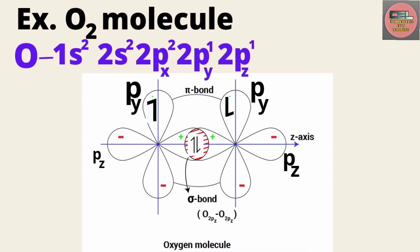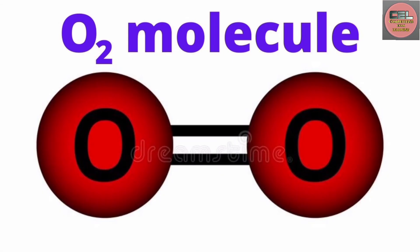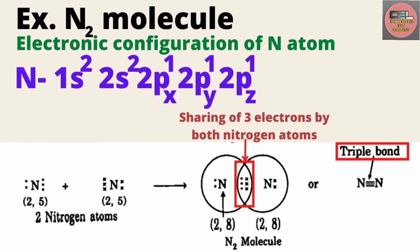When the 2py orbital of one oxygen atom comes close to the 2py orbital of another oxygen atom, they overlap sideways and form a pi bond. Hence two bonds form: one sigma bond due to overlapping of 2pz–2pz, and one pi bond due to overlapping of 2py–2py. This results in a double bond for oxygen.